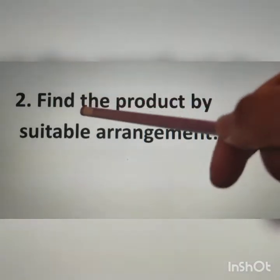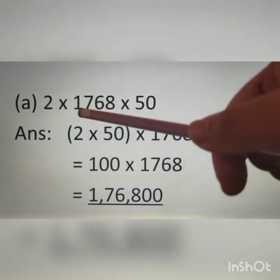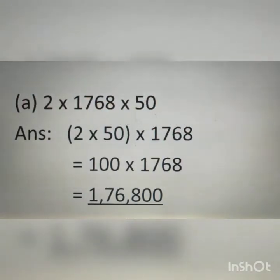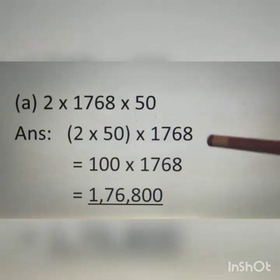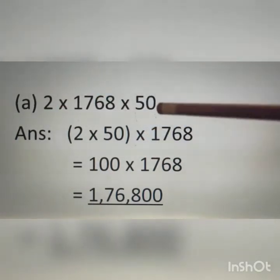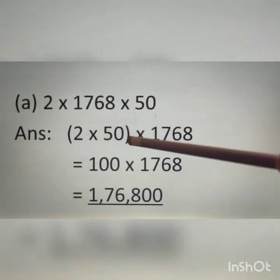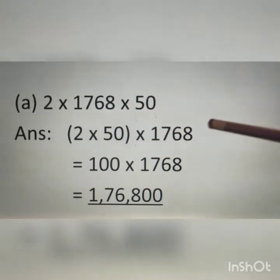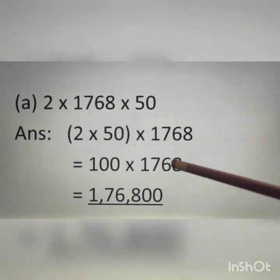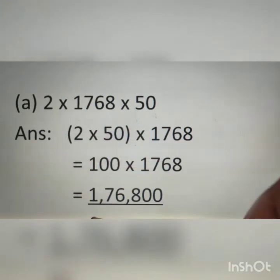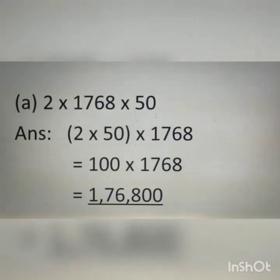Question 2: find the product by suitable rearrangement. Part A: 2 multiplied by 1768 multiplied by 50. We will rearrange the numbers and then do the multiplication. We know 2 into 50 is 100, so I rearrange 2 and 50 together. Therefore, 2 multiplied by 50 equals 100, multiplied by 1768, giving an answer of 1,76,800. By rearranging the numbers, the calculation becomes easier.